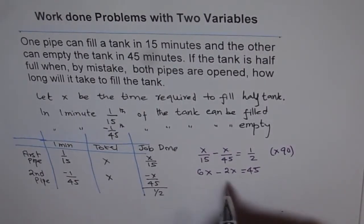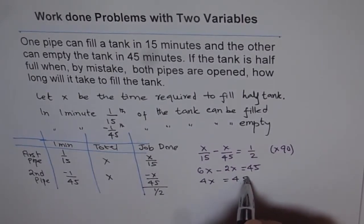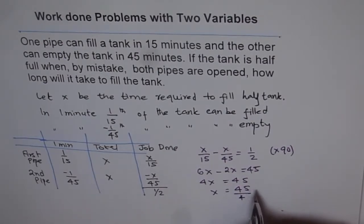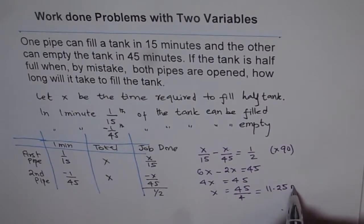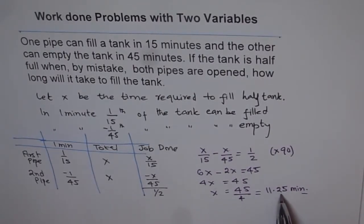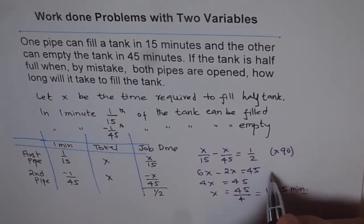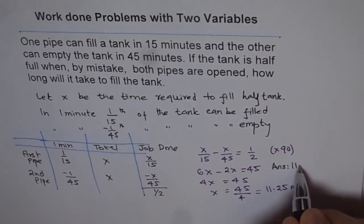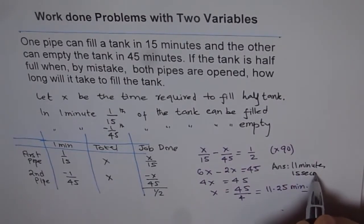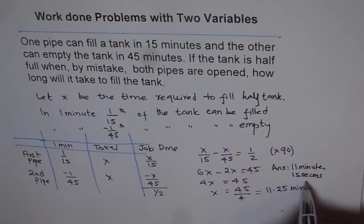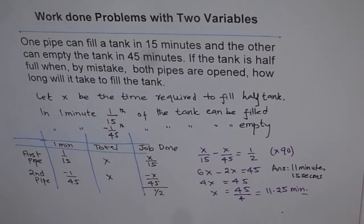Solving: 6x minus 2x is 4x, so 4x equals 45, which gives x equals 45/4, or 11.25 minutes. That is 11 minutes and a quarter of a minute. Since a quarter of a minute is 15 seconds, the answer is 11 minutes and 15 seconds. It took both pipes working together 11 minutes and 15 seconds to fill half the tank. Thank you.